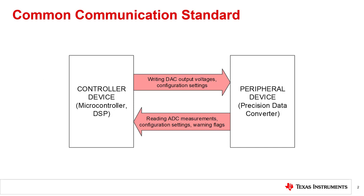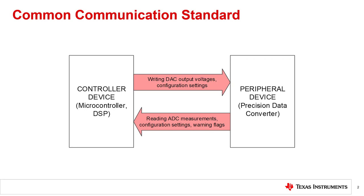Many precision analog devices have a digital interface between a microcontroller known as a controller and a controlled device known as a peripheral. Using precision ADCs as an example, the peripheral ADC measures an input voltage, and the controller microcontroller reads the data through digital communications. With precision DACs as a second example, the controller microcontroller writes a digital word to the DAC to set an output voltage. In both types of devices, this communication may be bi-directional. Many precision data converters may require some configuration and programming, so digital communications are needed to write to and read from the device.